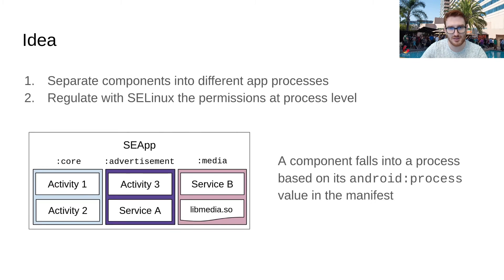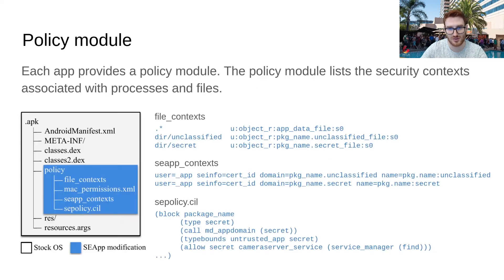First, separate components into different processes, then regulate the permissions associated with each process, introducing ad-hoc SELinux domains. As you might know, the first step can already be done using the Android process tag in the manifest, while the second part is more tricky because we need a way to enter app-specific policy modules, we need install-time support to validate and load the modules, but also run-time support to enforce the policies.